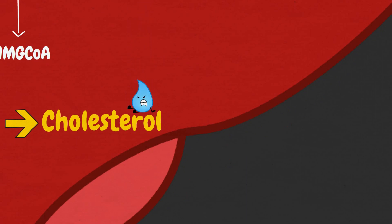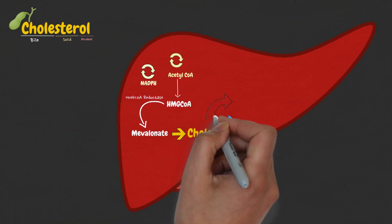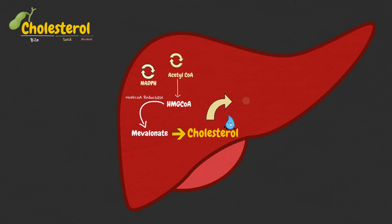Because of this, cholesterol dissolves in blood at exceedingly small concentrations. To be transported effectively, cholesterol is instead packaged within lipoproteins. Some of the cholesterol is esterified with fatty acids in a reaction catalyzed by acyl-CoA cholesterol acyltransferase, or ACAT, to form cholesterol ester.